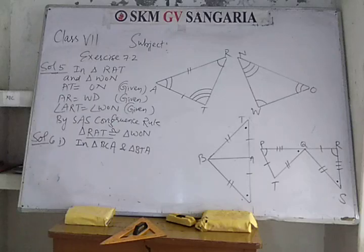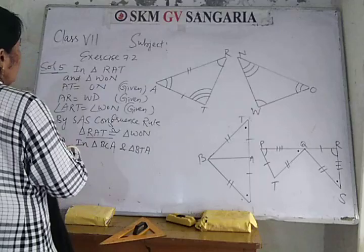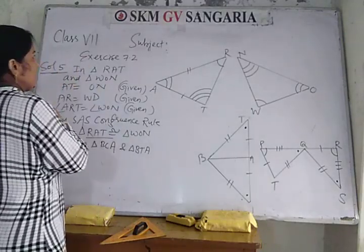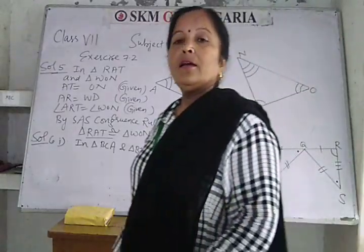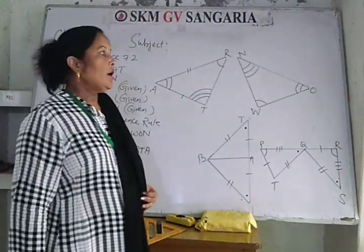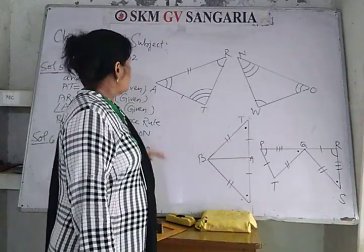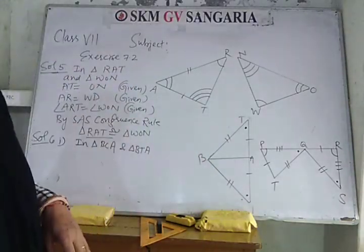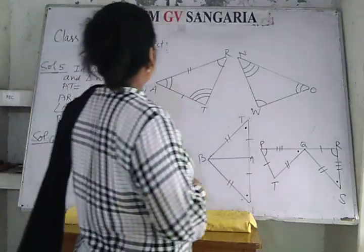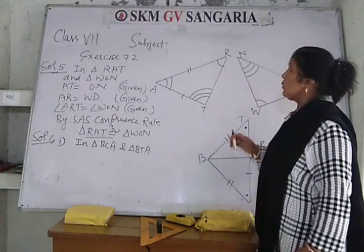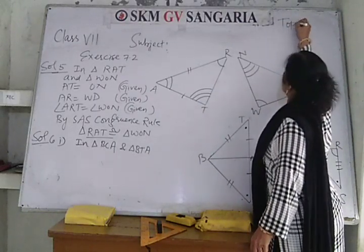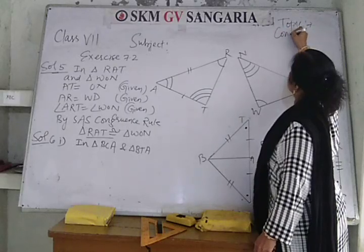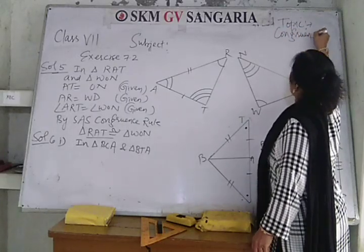In my previous videos, I have taught you all the congruence criteria: SSS rule, SAS rule, ASA rule, and RHS rule. Based on those criteria, you will solve exercise 7.2, question number five and six. So the topic for today is congruence of triangles.